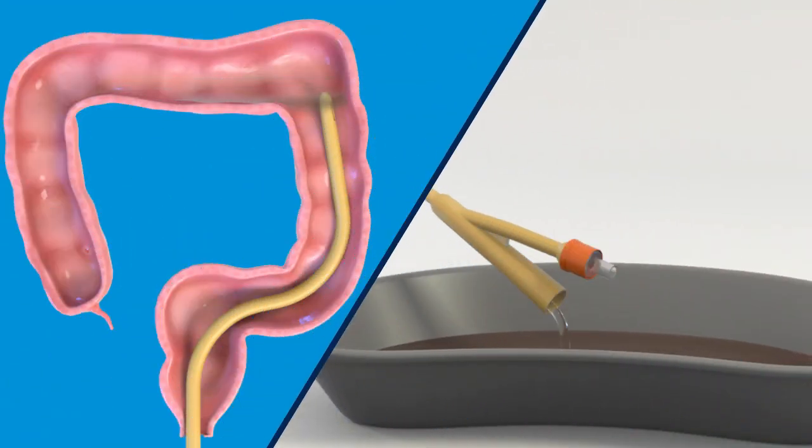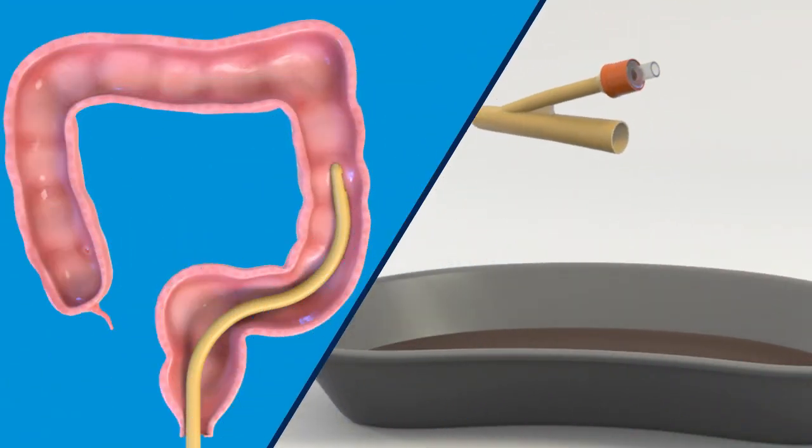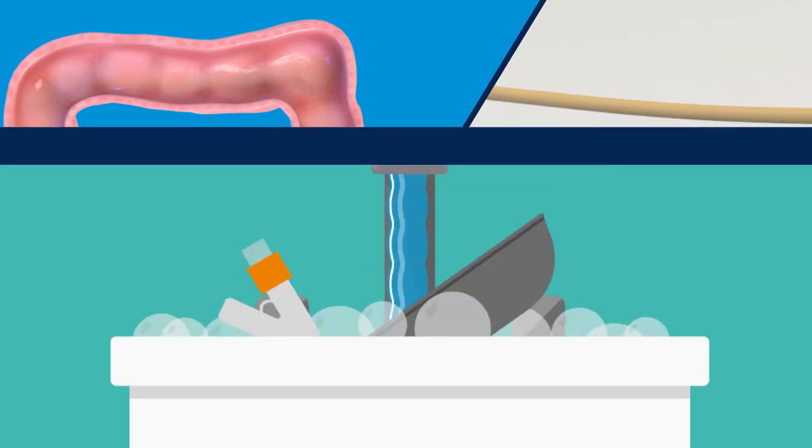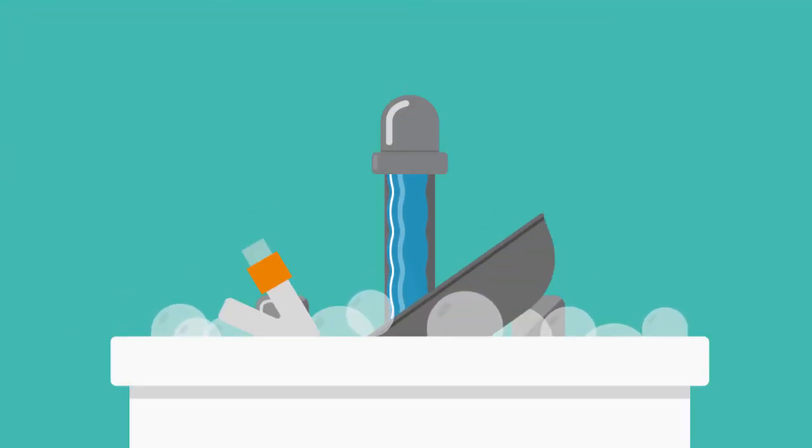Once the drained fluid is clear remove the catheter from the rectum and wash your supplies with soap and water then set out to dry. The supplies are reusable.